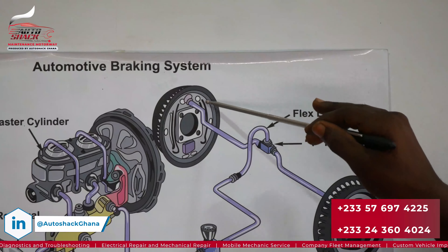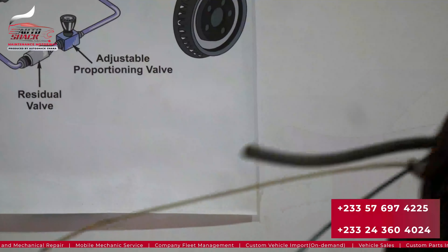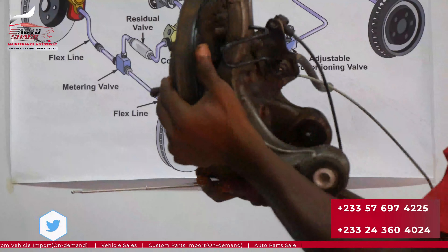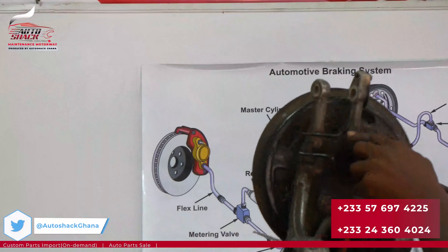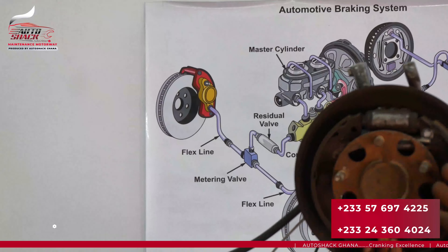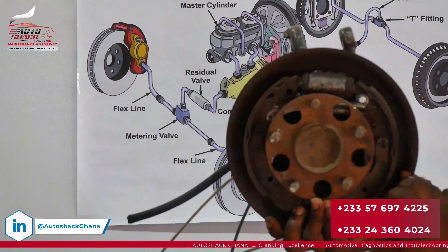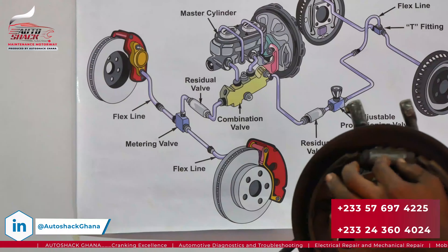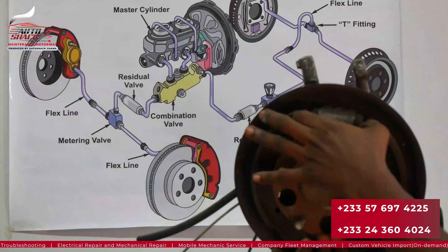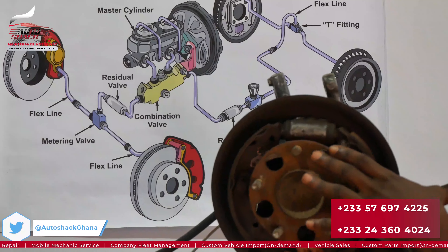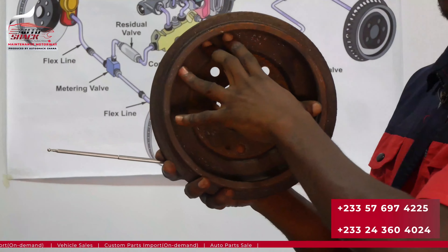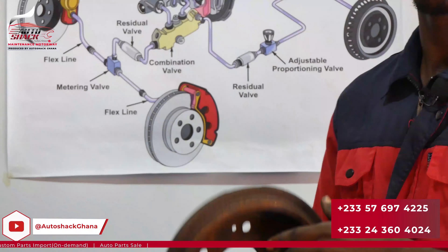The brake fluid goes through each line into the wheel cylinder at the rear. This is the brake drum system — the wheel cylinder has two pistons, one on each side. When the brake fluid enters it pushes both pistons outward, pushing the brake shoes out against the inner walls of the drum, thereby producing a braking effect.